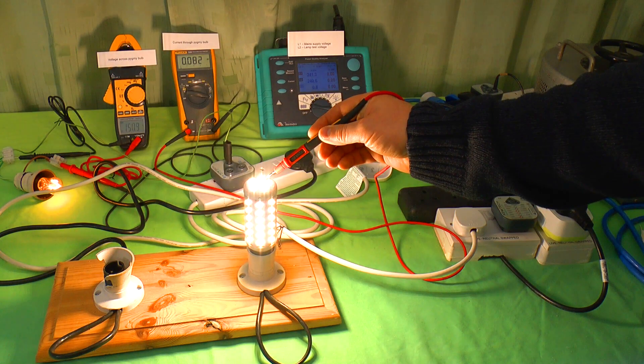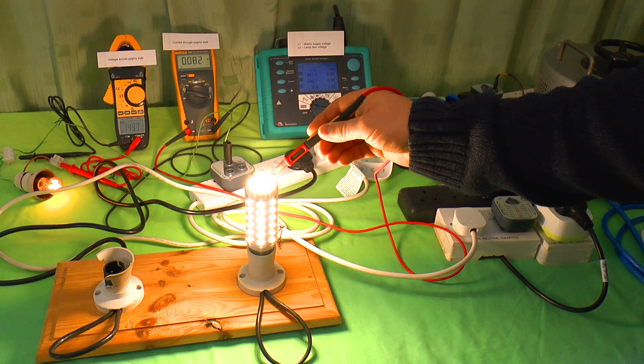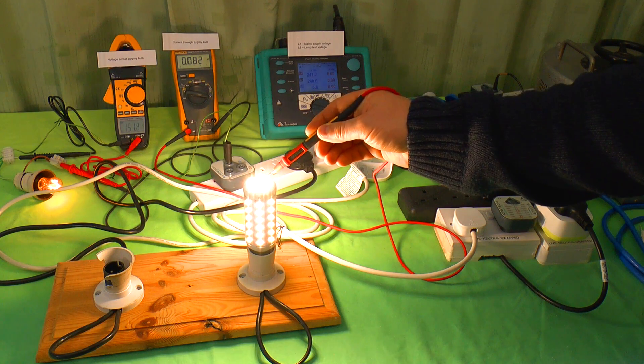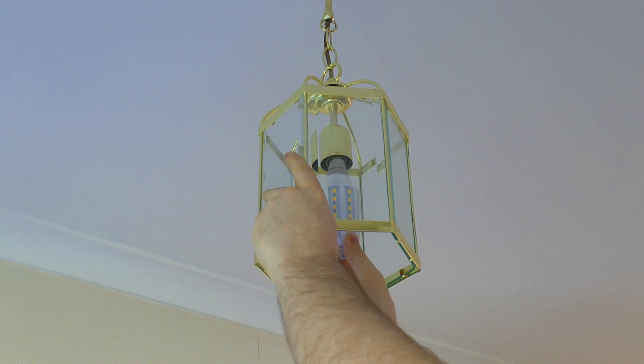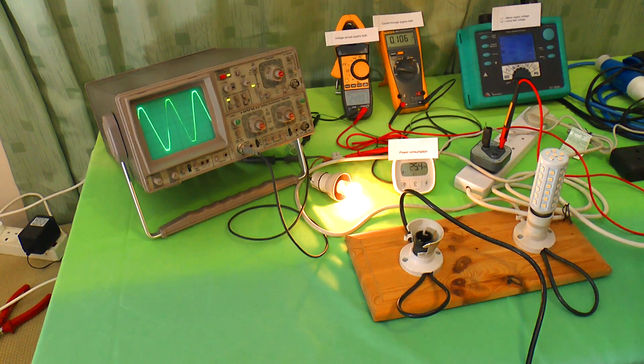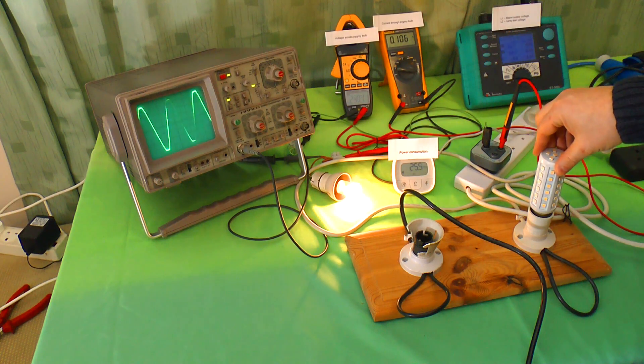Right. The bulb's lit quite brightly and the meters are showing 150 volts at 82 milliamps. That'll give you a nasty shock, especially if you're holding the bulb in one hand and a metal light fitting in the other.